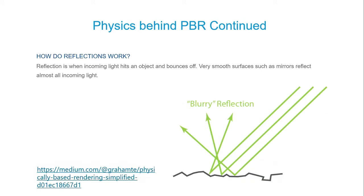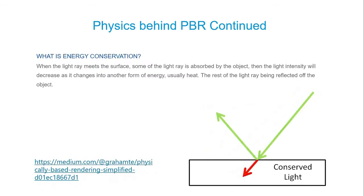How do reflections work? When light hits an object, the light bounces off. Mirrors are super smooth, so the light bounces straight off. More rough materials reflect light not so well — so they're going to have blurry reflections. Energy conservation: who's stepped on sand on the beach and it's super hot? That's energy conservation — different materials absorb heat. We can see light rays coming in, being reflected out, and some of the light is being conserved, so certain materials don't really reflect so much.